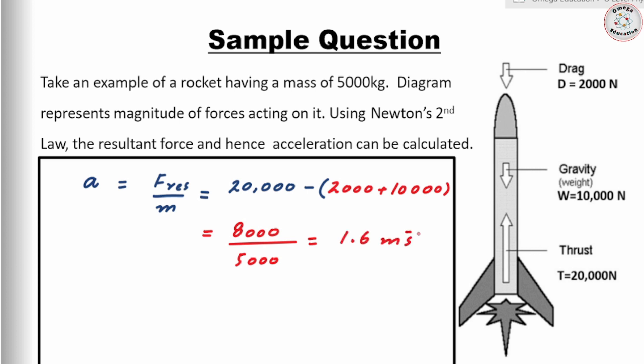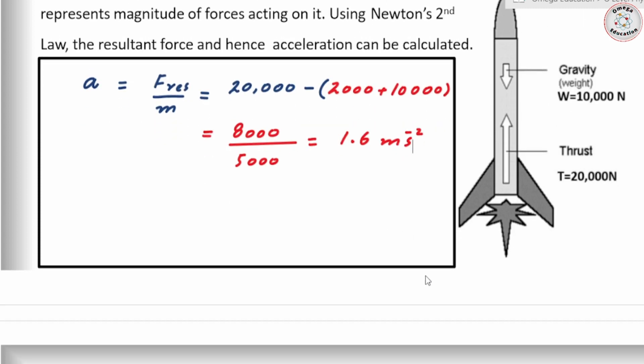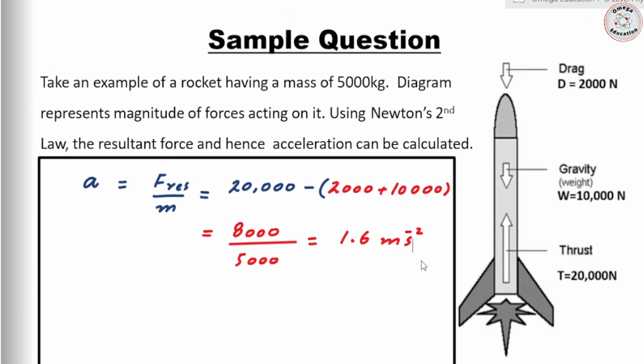No matter how many forces are given, combine them so that forces in the same direction are added and forces in the opposite direction are subtracted. In this case the rocket accelerates because the thrust is greater than the downward or backward forces.